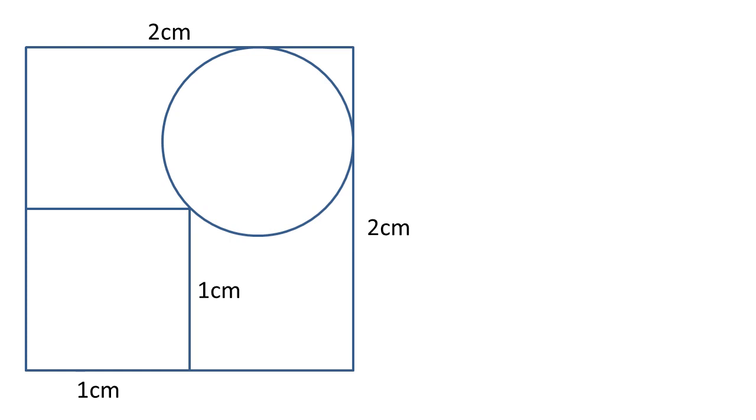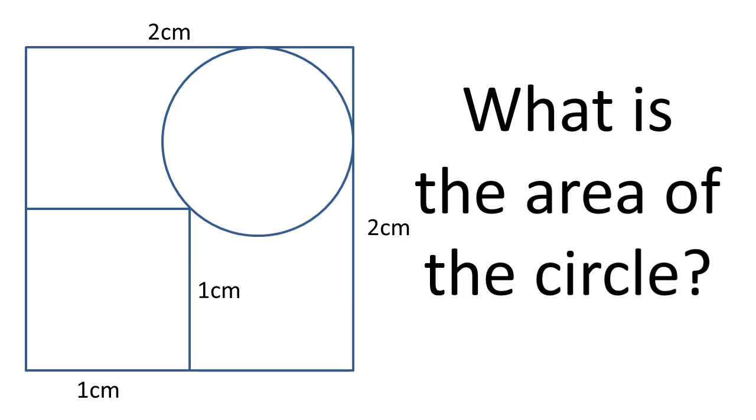In this problem we're given a 2×2 cm square. Inside that square there is a 1×1 cm square in the bottom left corner, and in the top right corner is a circle that is as large as will fit in the gap that's left. We need to work out the area of the circle.